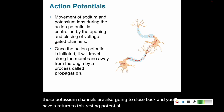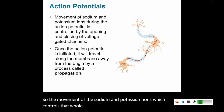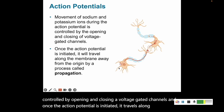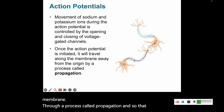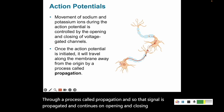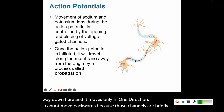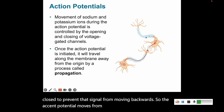The movement of sodium and potassium ions, controlled by opening and closing of voltage-gated channels, drives the entire signaling cycle. Once the action potential is initiated, it travels along the membrane through propagation, opening and closing channels all the way down, moving only in one direction. Channels are briefly closed behind the signal to prevent it from moving backwards, so the action potential travels from one cell to the next until it reaches its target.